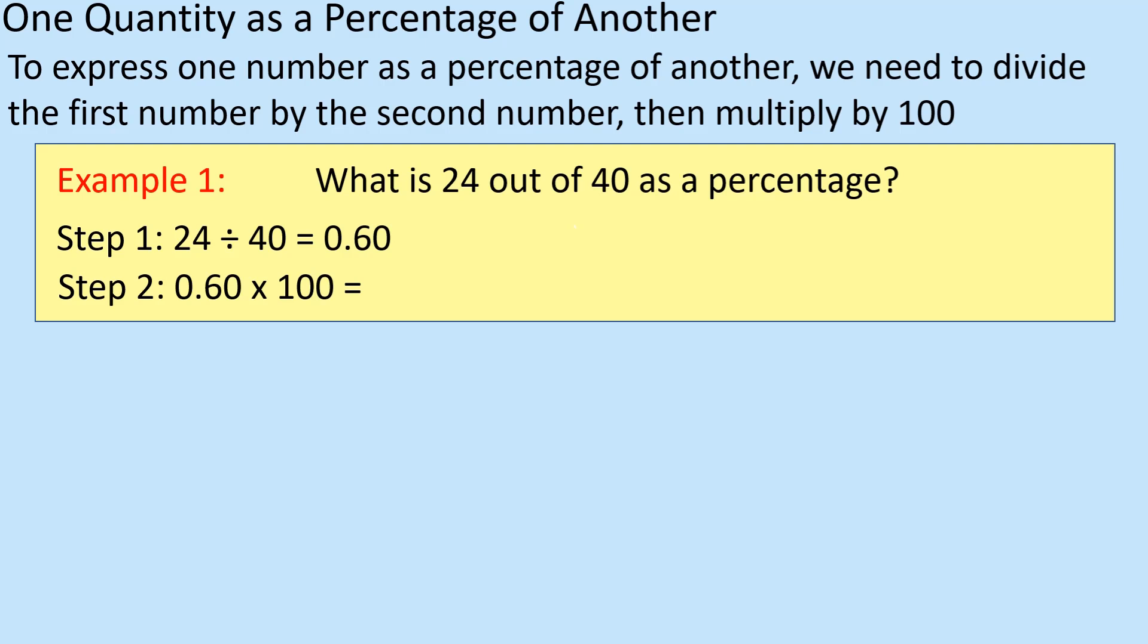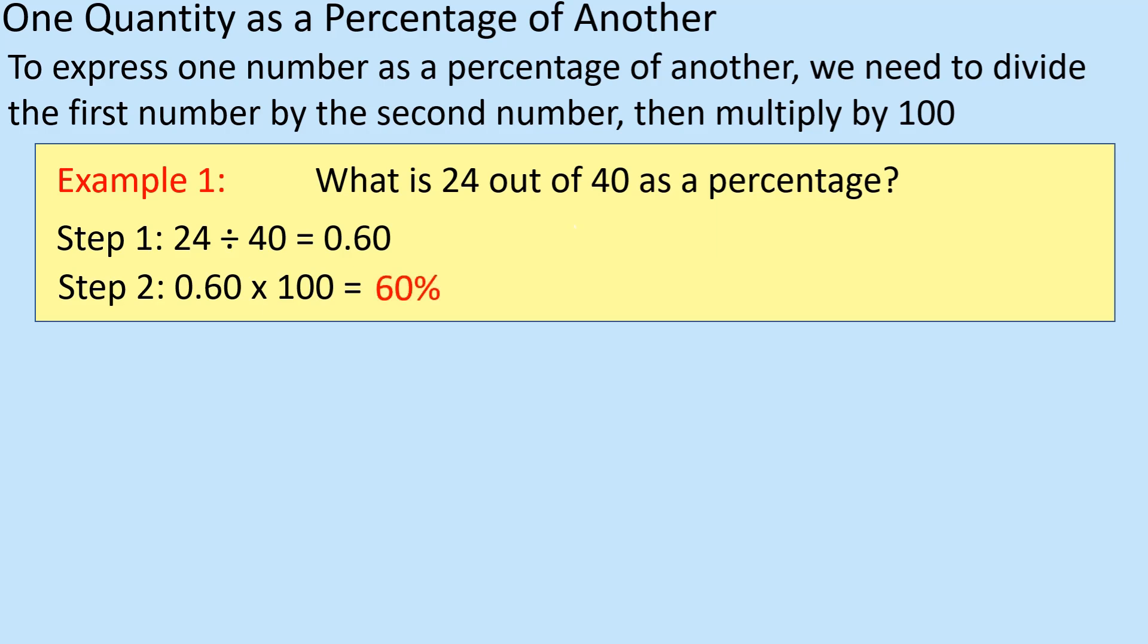So, 24 divided by 40, and then times it by 100. Alright, so you're basically going to turn it into either just a decimal, and then times it by 100, 60%.